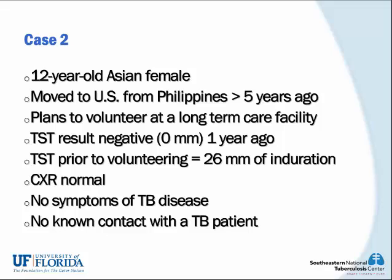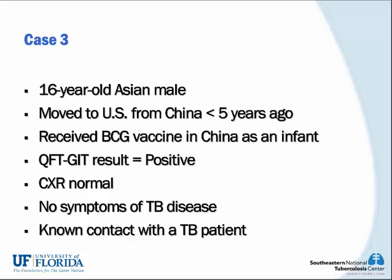The second case is a 12-year-old Asian female who moved to the U.S. from the Philippines more than five years ago, who plans to volunteer at a long-term care facility. Her TST result was negative, zero millimeters of induration, one year ago. However, prior to volunteering, her TST is now 26 millimeters of induration. Her chest x-ray is normal, she has no symptoms of TB disease, and no known contact of a TB patient. The third case is a 16-year-old Asian male who moved to the U.S. from China less than five years ago, received BCG vaccine in China as an infant, and had a Quantiferon test which was positive. His chest x-ray is normal, no symptoms of TB disease, but he is a known contact with a TB patient.